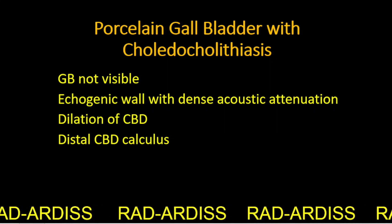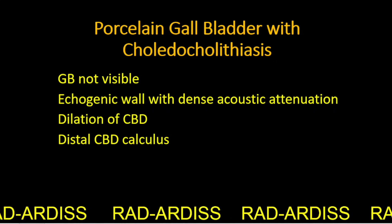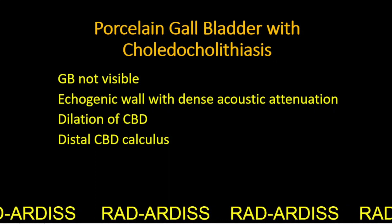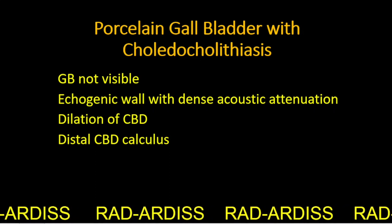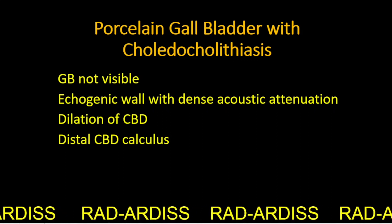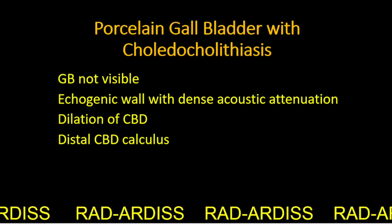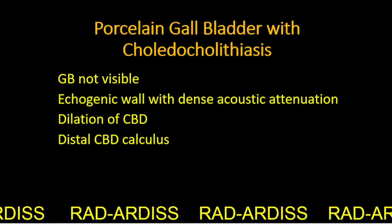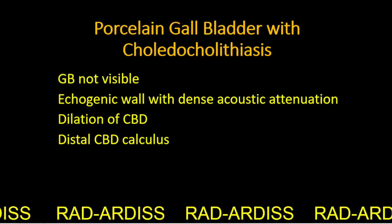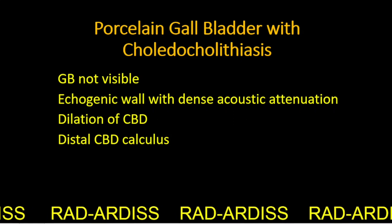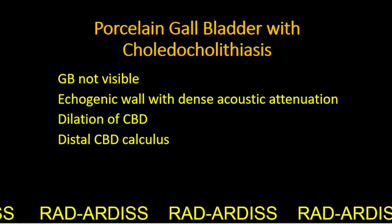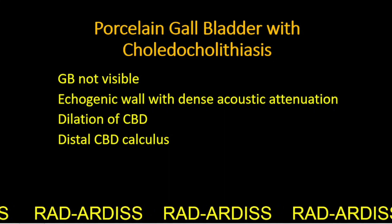The terminology 'porcelain' is derived from the appearance of the gallbladder when removed surgically — it appears bluish in color and shows a brittle consistency. The significance of porcelain gallbladder is that it is associated with adenocarcinoma of the gallbladder; there is a greater chance of cancer developing inside this kind of gallbladder.